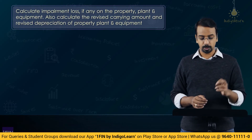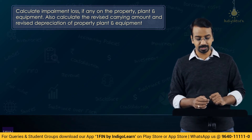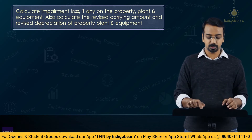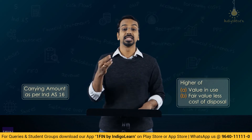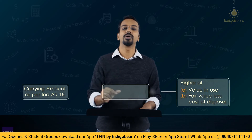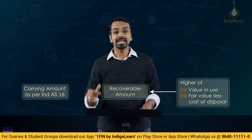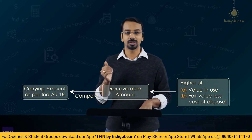We are asked to calculate the impairment loss if any on property, plant and equipment, and also the revised carrying amount and revised depreciation. There are two aspects: first, arrive at the carrying amount as on 31st March Year 4 applying Ind AS 16 principles. Then calculate value in use by discounting future cash flows at 15%. Compare value in use with fair value less cost of disposal to arrive at the recoverable amount, then compare that with carrying amount to assess any impairment loss.